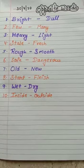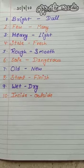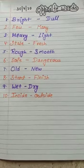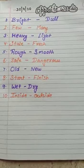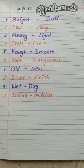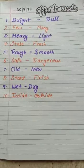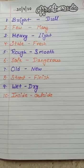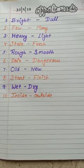Sixth one is safe, dangerous. S-A-F-E, safe. Means surakchit. D-A-N-G-E-R-O-U-S, dangerous. Means khatarnak.